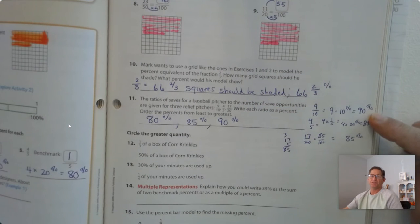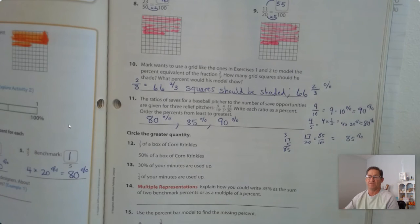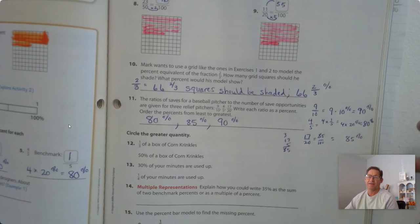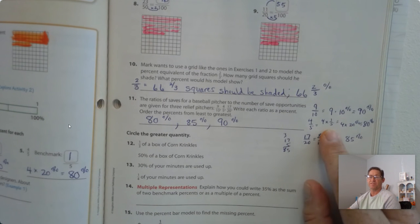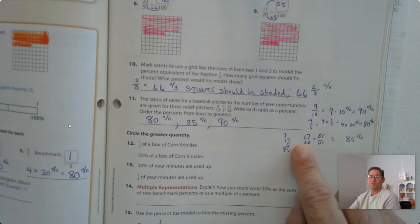So the first two, I just used benchmarks. I knew that 1 tenth is 10%, and I have 9 of them, so 9 times 10, 90%. 1 fifth is a benchmark that is 20%, so I have four sets of them, so 4 times 20 is 80%. In 17 20ths, I just multiplied by 5 to change it to 100. 17 times 5 is 85, so 85%.